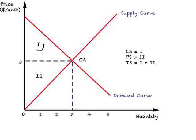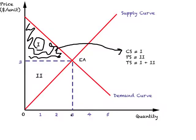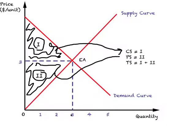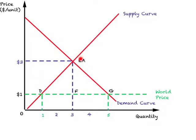Based on this diagram, area one — the area of the triangle above the equilibrium price — represents consumer surplus. Then we have area two, the triangle below the equilibrium price, which represents producer surplus. So the total extra benefit derived by the society when there is no foreign trade is the total surplus, which is the sum of consumer and producer surplus: one plus two. This is the welfare consequence of a market economy not engaging in foreign trade.